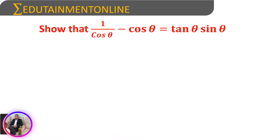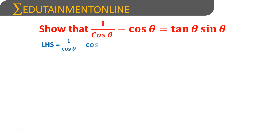So 1/cosθ − cosθ equals tanθ·sinθ. Here, take it as 1. Now if we cross multiply, that will be 1 × 1 = 1, and cosθ × cosθ is cos²θ in the denominator cosθ. So we get 1 − cos²θ by cosθ.